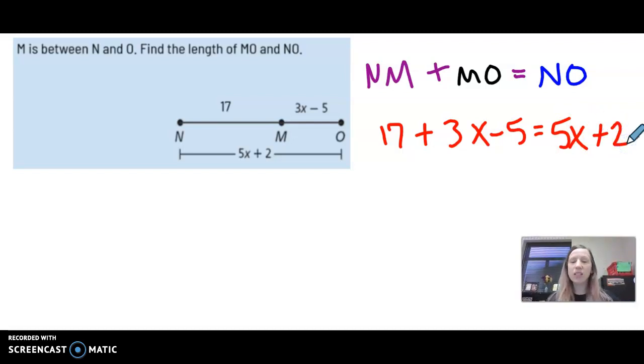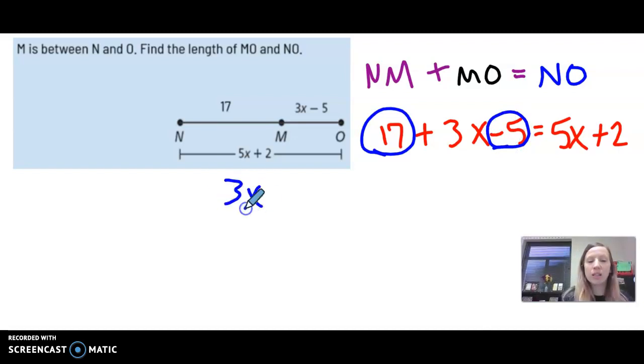So from here, this is an algebraic equation like you did last year in algebra one. The first step is to combine any like terms we have. So on the left side, we have 17 minus 5. The 3x will remain the same and 17 minus 5 is a positive 12. On the other side, we have 5x plus 2 still because there's nothing that can be combined on that side.